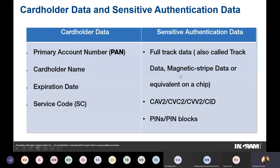Magnetic stripe data is increasingly being replaced by chip and pin cards. The chip can be inserted into an ATM or POS terminal, with the PIN embedded within the chip itself. The three-digit CVV — also called CAV2, CVC2, CVV2, or CID depending on the brand — and the four-digit PIN used to protect your card: these different components together constitute the sensitive authentication data of the card.